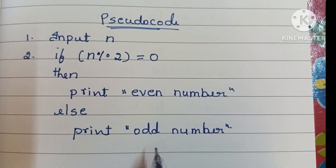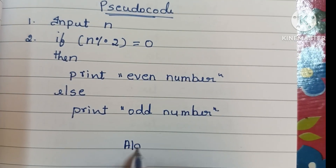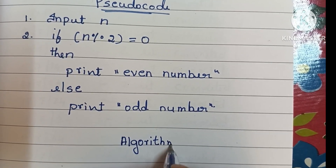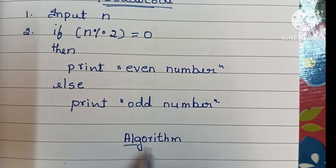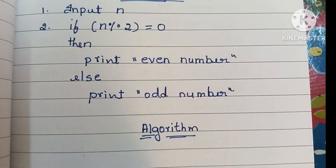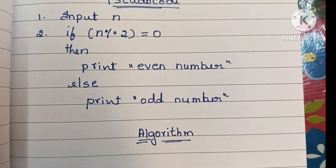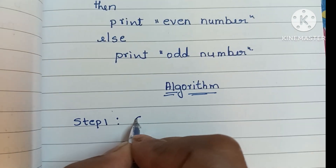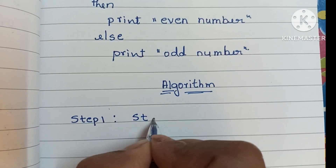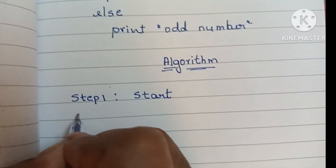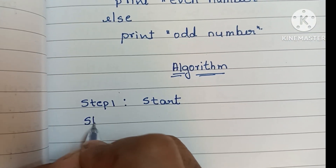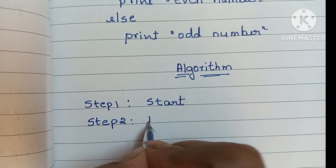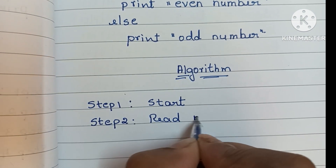Next, we have to write the algorithm to check whether a given number is odd or even. Step 1: an algorithm always starts with a start statement, so we write start. Step 2: we read the input number, that is: read n.